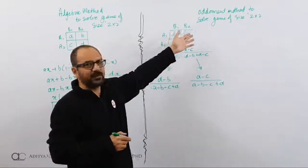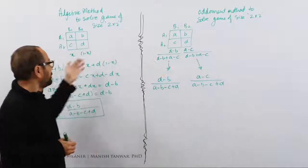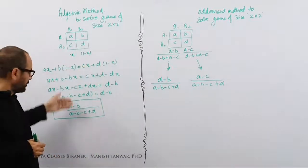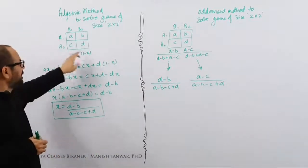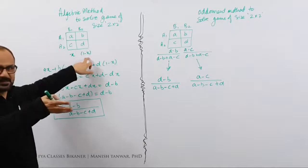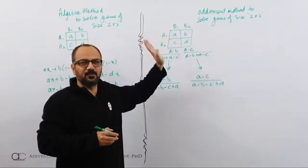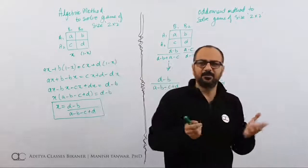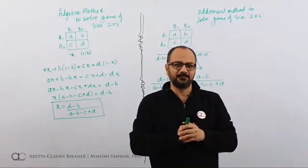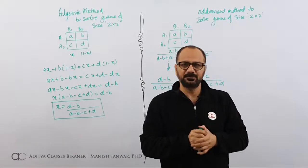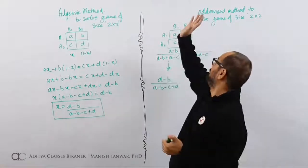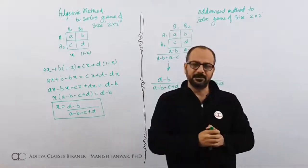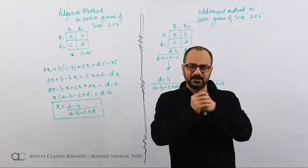In oddment method, we directly get values. While in algebraic, we need to formulate these equations. Then we get value of X. Then we get value of 1 minus X. While in this case, we get values directly. So yes, execution is different but formula might appear to be same. So this was it about algebraic and oddment method comparison between them. Until you meet next time, do take care. Thanks for watching. Bye-bye.